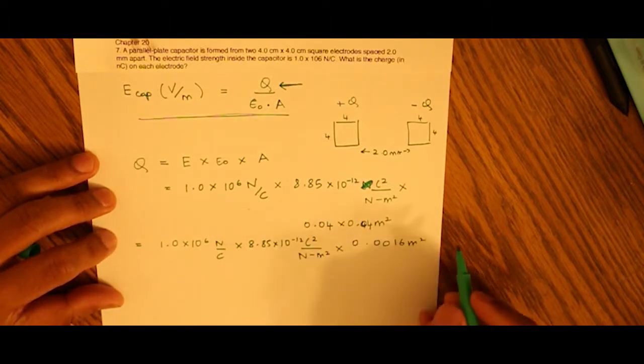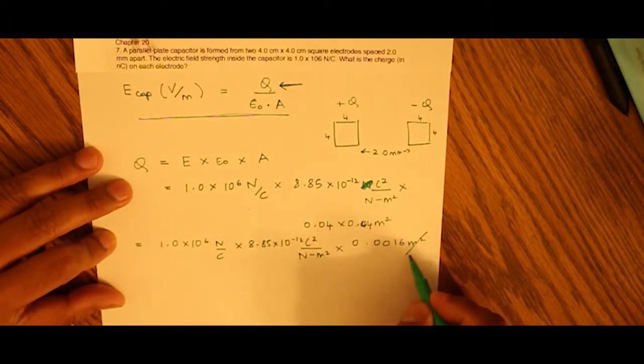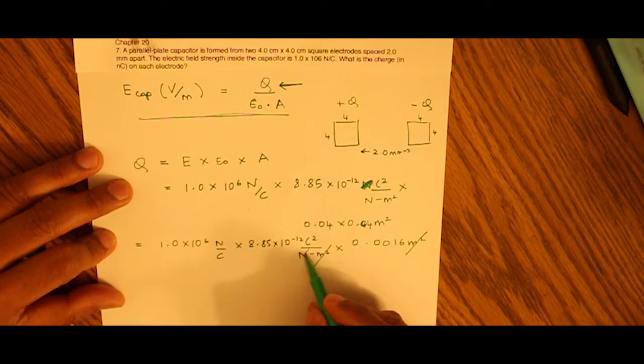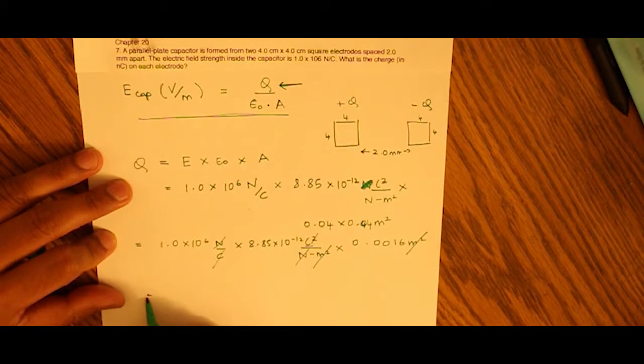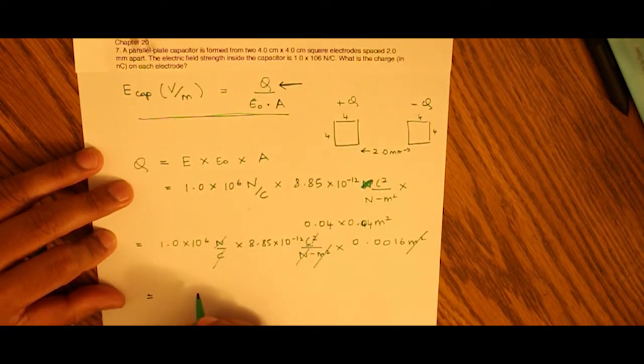We can see that the units cancel: meters squared, newtons, and what we're left with is a unit of charge, coulombs. When we multiply this together, we get 14.6 × 10^-9 C.